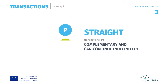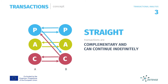First, straight transactions — or complementary transactions. If person A and person B apply the concept of straight interactions, a communication can run very smoothly and, in theory, can continue for a very long time. Let's take a look at an example.